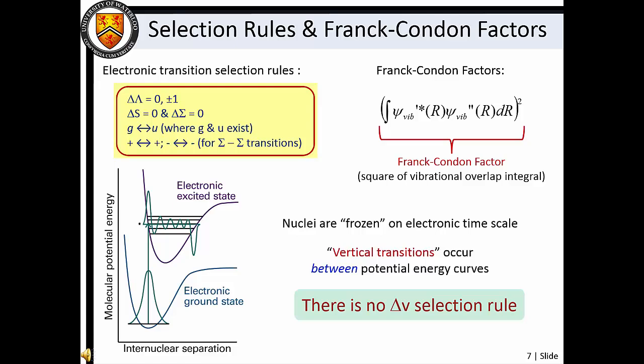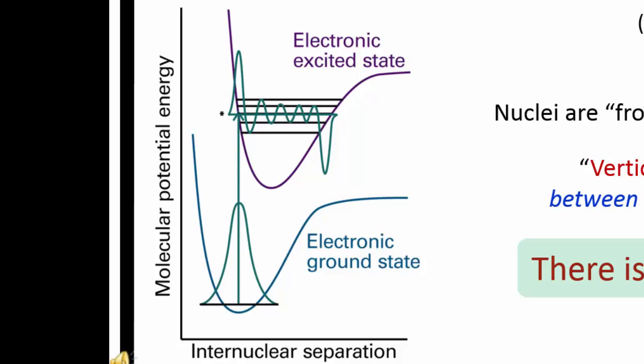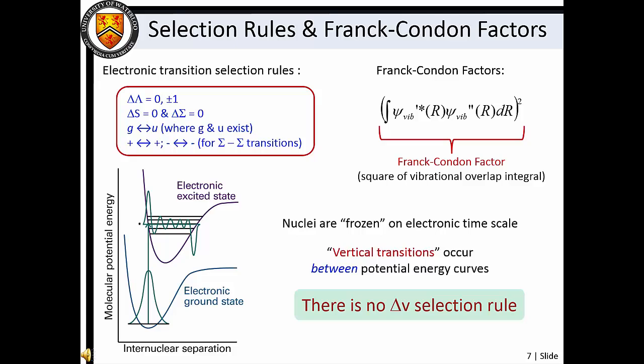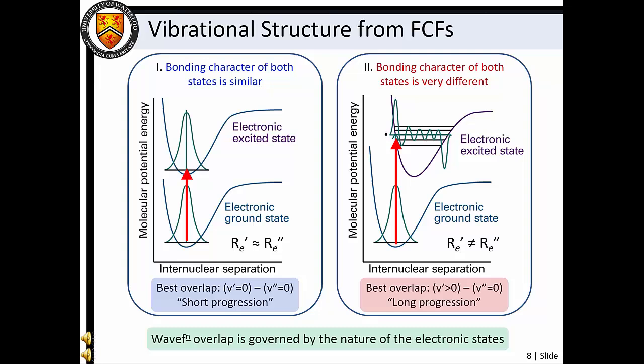The electronic transition selection rules for molecules look somewhat familiar to those that we found for atomic transitions. Here we find that the orbital angular momentum can change by zero or plus or minus one, and that transitions must occur between states with the same value of s and sigma. Notice that there is no delta-v selection rule. Recall that nuclei are stationary on the electronic timescale within the Born-Oppenheimer approximation. So when electronic transitions occur, the nuclei remain in fixed positions. On our potential energy curve diagram, we would represent such a transition with a vertical projection of the ground vibronic state onto the excited state wave function. The larger the overlap between these functions, the more intense the vertical transition. This, of course, is a graphical representation of the vibrational overlap integral.